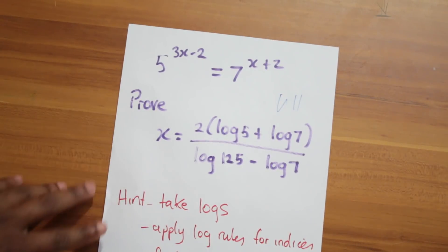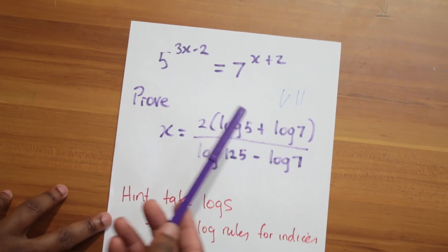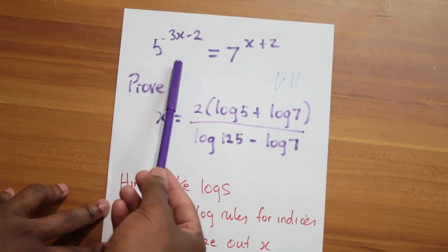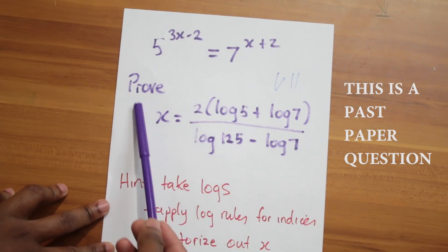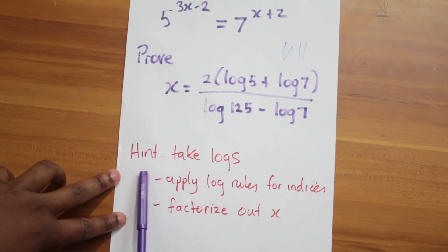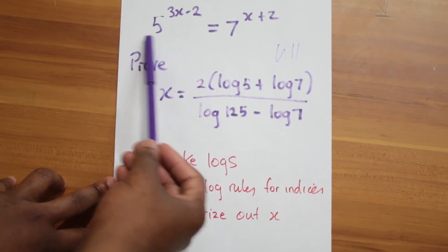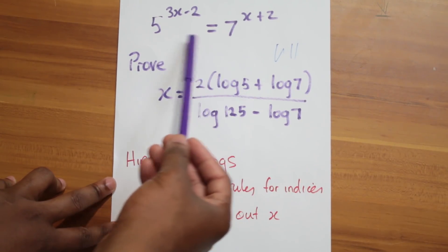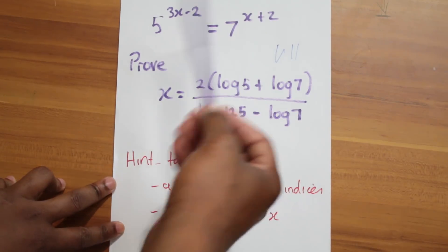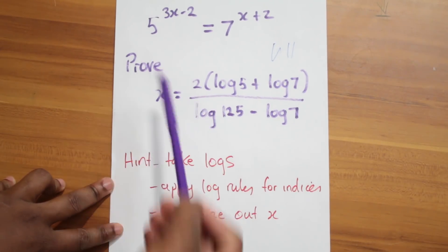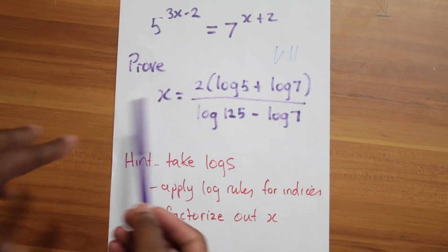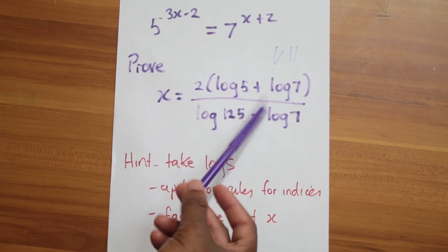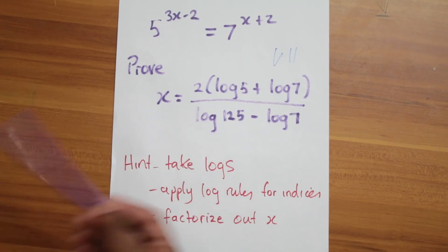Try this bonus one: 5 to the power of x plus 2 equals 3 to the power of 3x minus 2. They want you to prove or solve it. Hints: take logs, then apply the log rule for indices — bring down the (x+2) and the (3x-2) using that rule. Then factorize out your x, bring all x terms to one side, factorize and rearrange. Good luck, blessings!